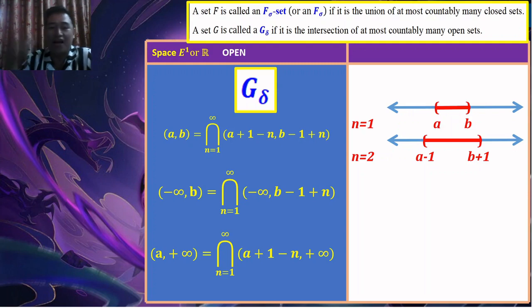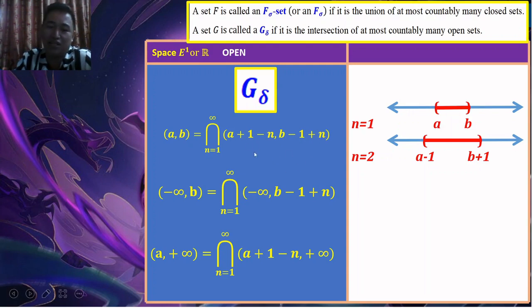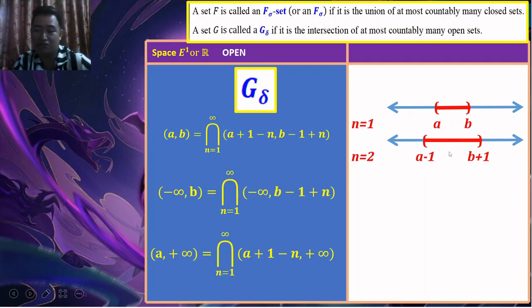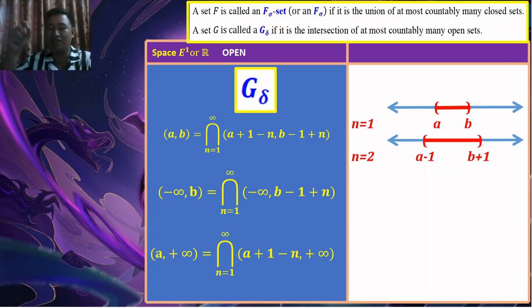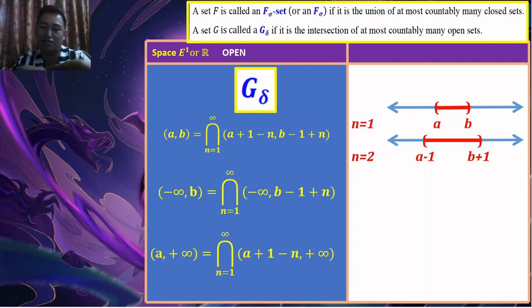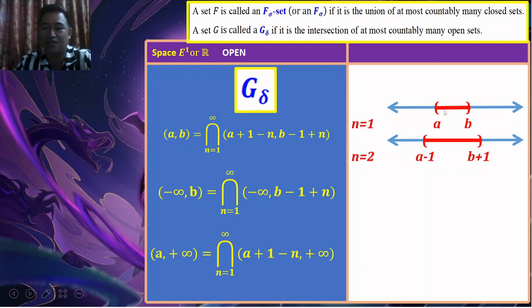For the G-delta examples: when N=1, the interval is (A, B). When N=2, we get (A - 1, B + 1), so the interval gets larger as N increases. As N approaches infinity, the interval grows. The intersection of all these sets is the open interval (A, B), which is the smallest interval when N=1.